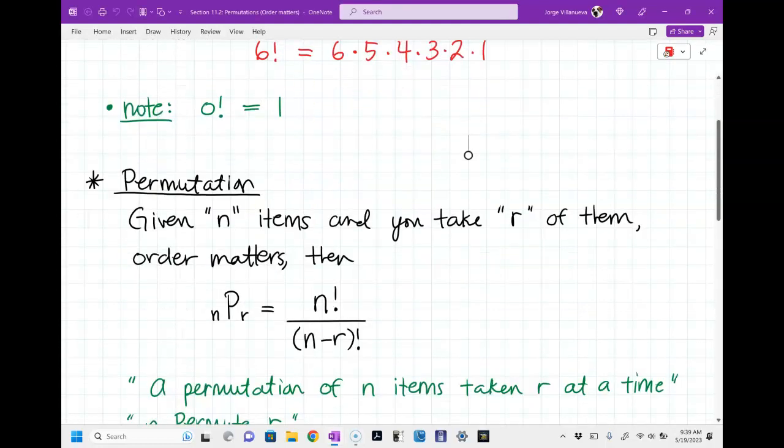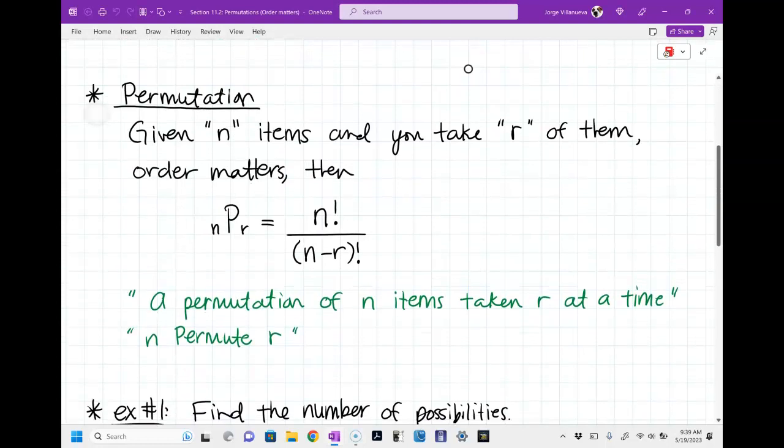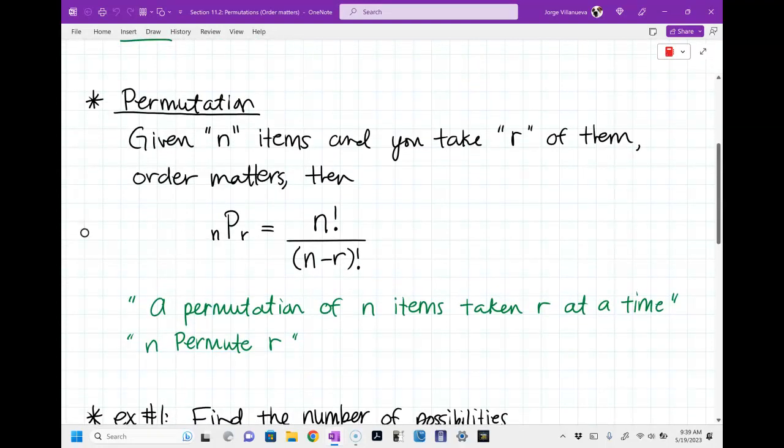Now we moved on and I had you guys write this down before we started recording and we talked about permutations. A permutation is they're going to give you a certain number of things, it could be people, numbers, books, classes, whatever, and you're going to have to take them R at a time, but order matters, so you got to think about that, like which way do I want things to be done.